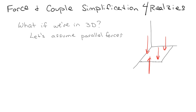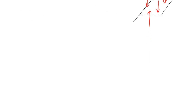We're going to look at force and couple simplifications in 3D. To start off, we're going to assume that we have parallel forces, which we can get rid of later. Essentially, what can we do if we have a bunch of forces in parallel on a plate? How can we reduce those?